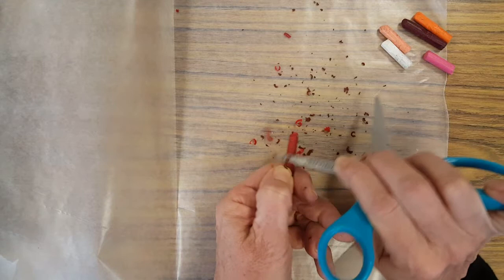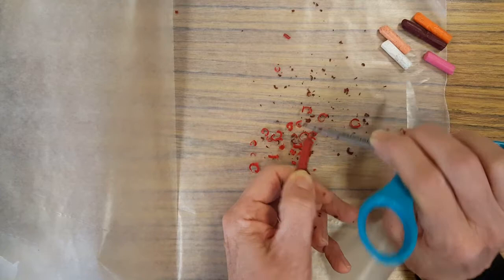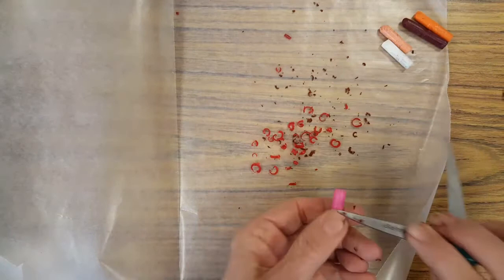So I'm using a little bit of red, a little bit of brown and you can have as many shavings as you want on your wax paper, as many colors as you want. You can mix up the colors or you can make little piles of different colors in different places. You get to decide.